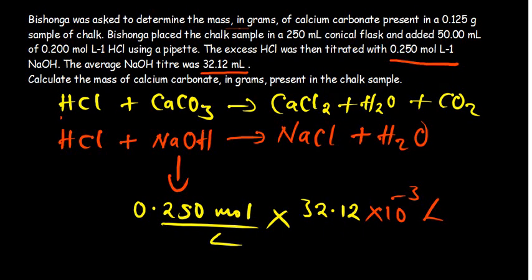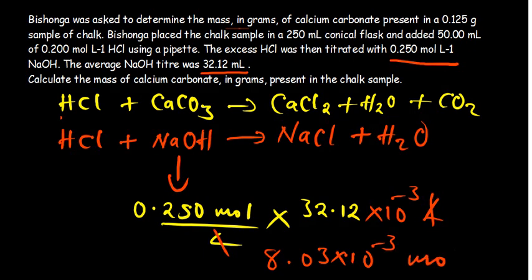The liters cancel out, so we grab the calculator and perform the calculation: 0.250 multiplied by 42.12, then divided by 1000. The result is 8.03 × 10⁻³ moles. These are the number of moles of sodium hydroxide that had reacted in the second reaction.